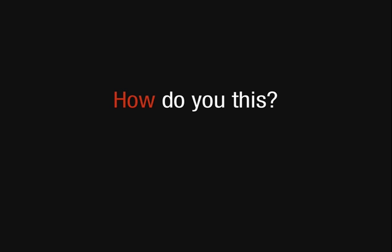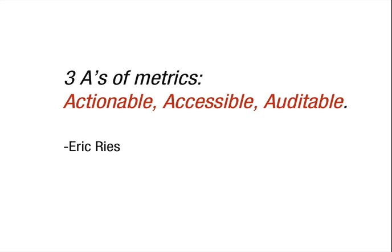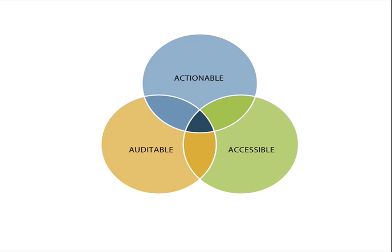So how do you build a dashboard that lets you do all of this? When building your dashboard, it's helpful to run them through Eric Ries' 3 A's of metrics test. In order for your metrics dashboard to be effective, it needs to be actionable, accessible, and auditable. Actionable metrics means that it should be possible to tie specific repeatable actions to observed results. Once you know what actions caused the results, you can then make a decision to do more of what worked and stop doing what isn't working.